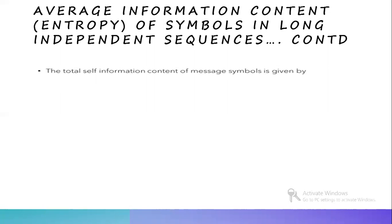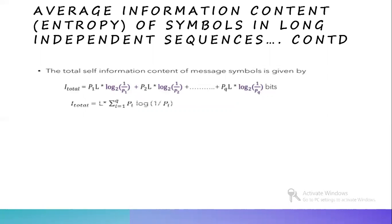The total self-information content of the message symbols is given by I_total equal to P1·L·log(1/P1) base 2 plus P2·L·log(1/P2) base 2, plus Pq·L·log(1/Pq) bits. This can also be written as I_total equal to L into summation from i equal to 1 to Q of Pi·log(1/Pi). This is the total self-information content of the message symbols.